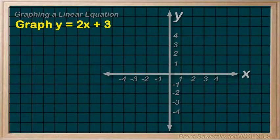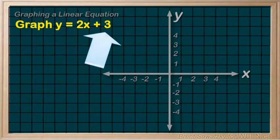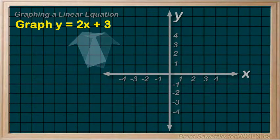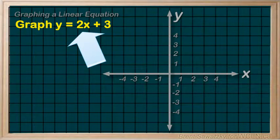In our equation to graph, the y-intercept is just this number at the end, the three, and the slope is the number being multiplied by the x, in this case a plus two.